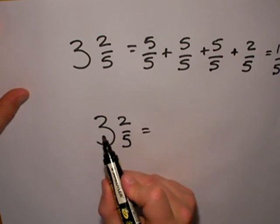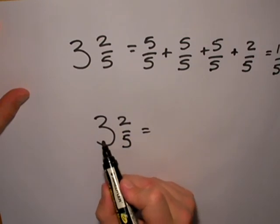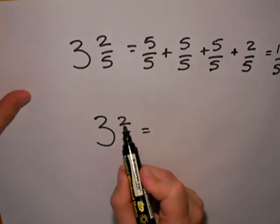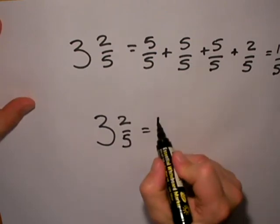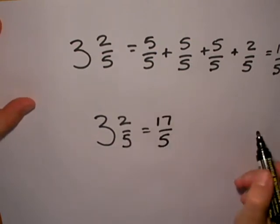So 1 whole 1 is 5 fifths, 2 whole 1s is 10 fifths, 3 whole 1s is 15 fifths, plus the 2 that I've got there, just give me 17 fifths.